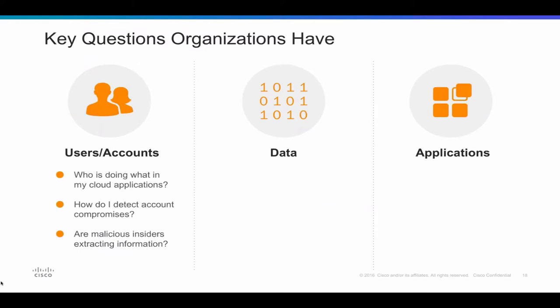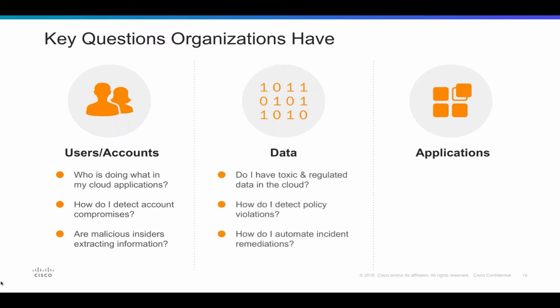Ultimately this leaves organizations with a series of questions around users, data, and apps — going back to that shared responsibility model. On the user side: how can I tell what users are doing in my cloud applications? How do we detect anomalous activity that might be indicative of account compromise? And how do we correlate that information across cloud applications to detect anything suspicious? When it comes to data — just like traditional on-premises DLP but in the cloud — do we have sensitive information going to cloud platforms, and if so, how can I detect and remediate that in an automated fashion?